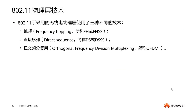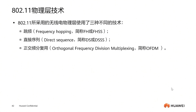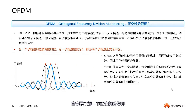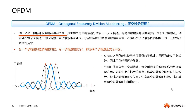Let's first look at the physical layer technologies. In 802.11, the wireless physical layer uses three different technologies — mainly modulation technologies — including frequency hopping, direct sequence, and orthogonal frequency division multiplexing. The first two are basically obsolete, so we should mainly focus on OFDM. So what is Orthogonal Frequency Division Multiplexing? It is a multi-carrier coordination or modulation technology.